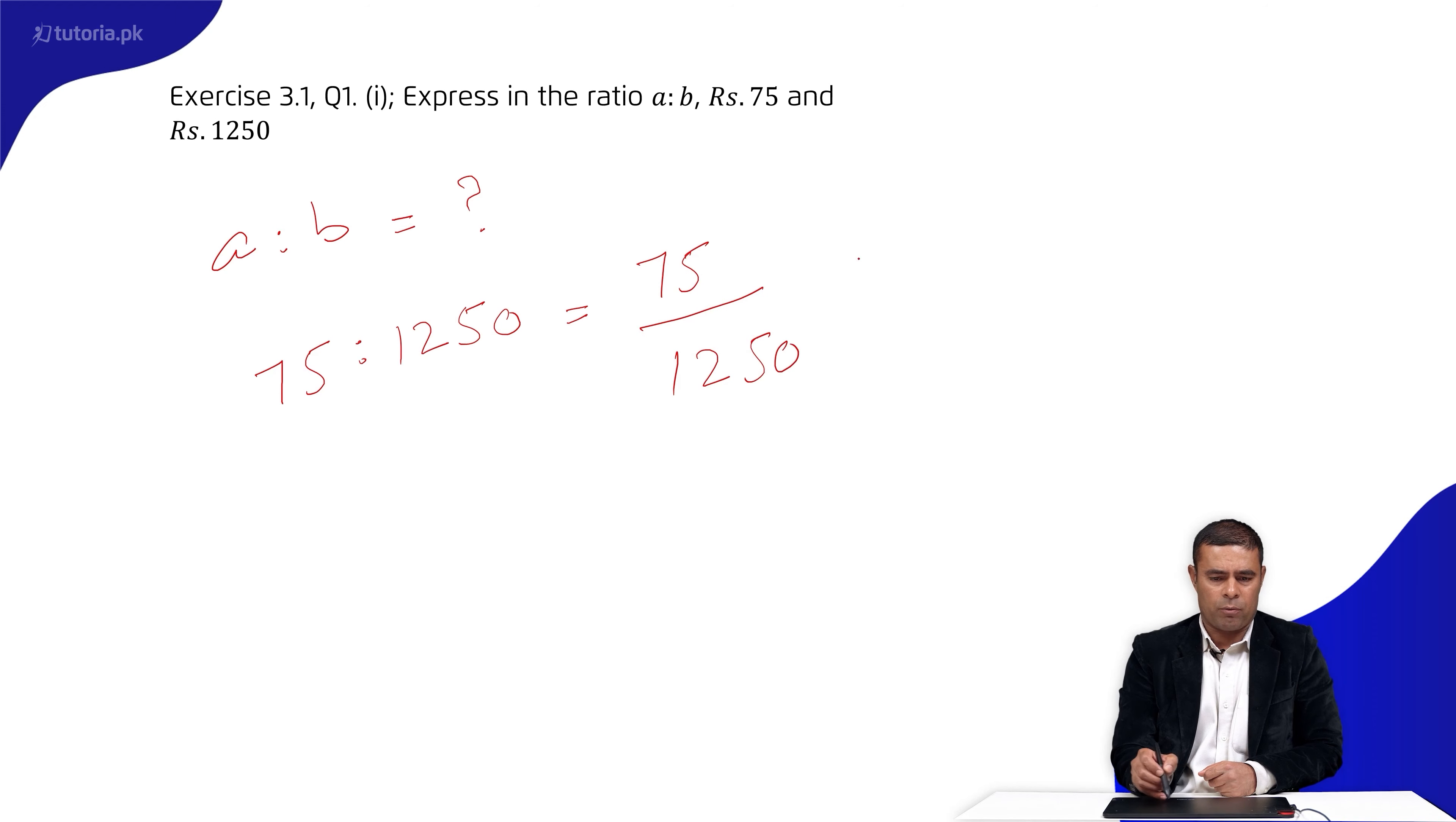An important note: if it's written x ratio y, this equals x over y. If it's written a ratio b, this equals a over b. So 75 ratio 1250 can be simplified using the table of 5.